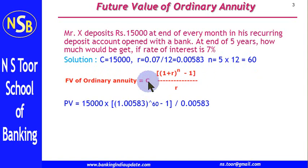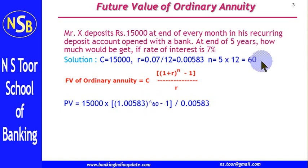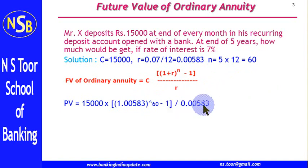C is the cash flow, that is 15,000. Then we have 1 plus r raised to the power n, where n equals 60, divided by the rate of interest r, which is 7 divided by 12.